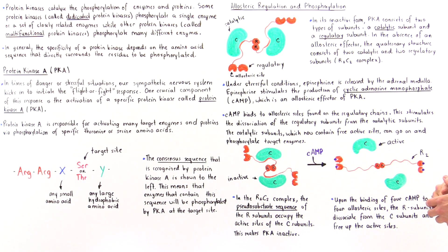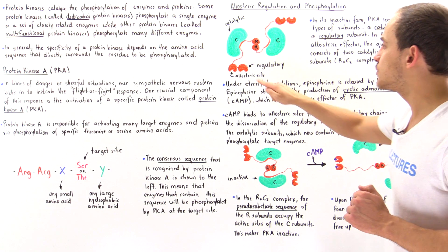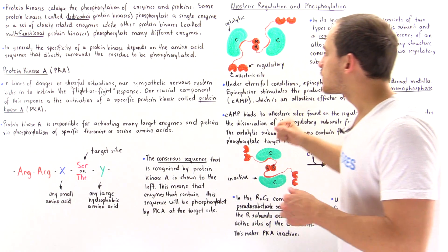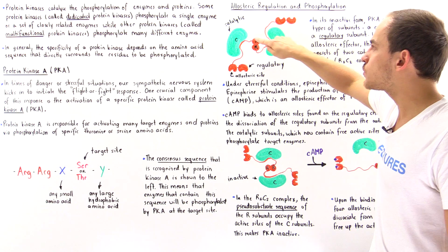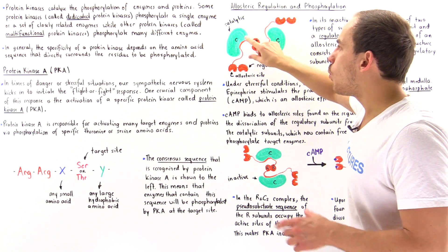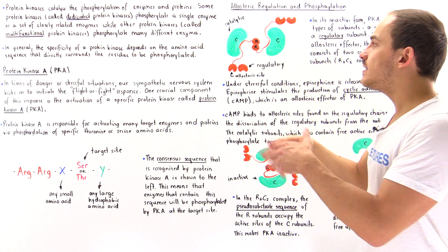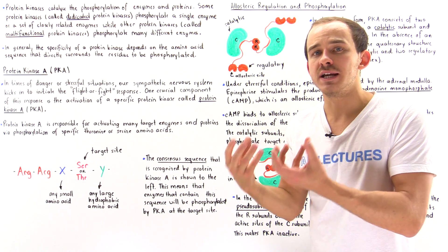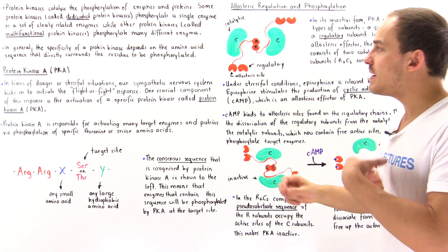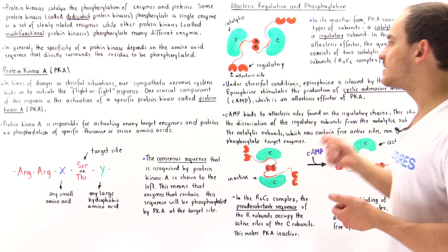Once cAMP binds onto all four of these regulatory sites — four cAMP molecules binding to four sites — that creates a conformational change that allows the R2 complex, the entire regulatory subunit section, to dissociate from the two catalytic subunits. As a result, the active sites, which were occupied in the inactive form, become free. Once the active sites are free, these two catalytic subunits can go on and catalyze many different types of target enzymes via the process of phosphorylation.